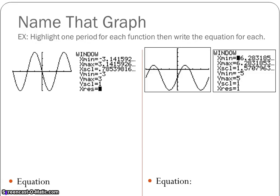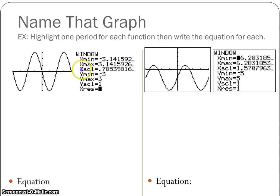Now we are moving on to Name That Graph. For Name That Graph, we are going to be given a graph and then some information about the scaling. We are going to have to read the x min, x max, and x scale so we know what the values are if there is a period change, and also the y min and y scale to see if it's going by twos or ones or something like that.